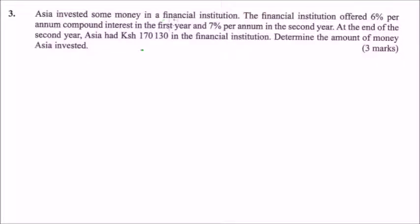ASEA invested some money in a financial institution. The financial institution offered 6% per annum compound interest in the first year and 7% per annum in the second year. At the end of the second year, ASEA had 170,130 in the financial institution. Determine the amount of money ASEA invested.